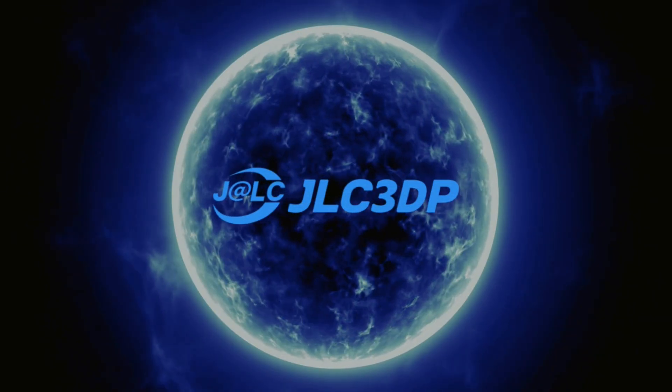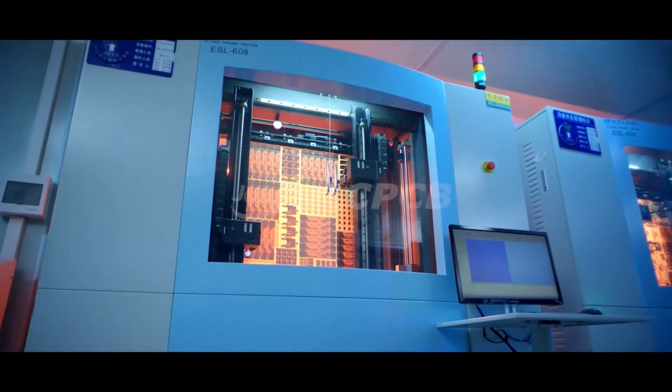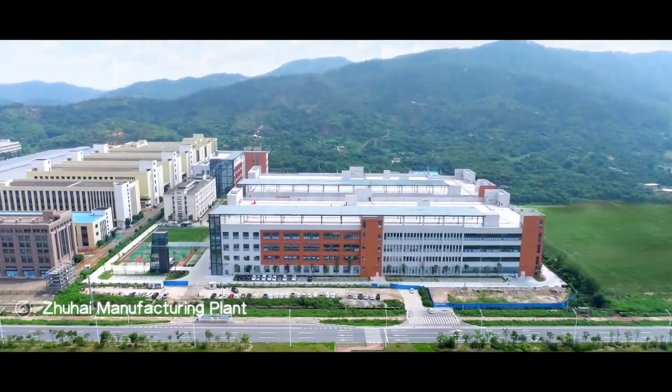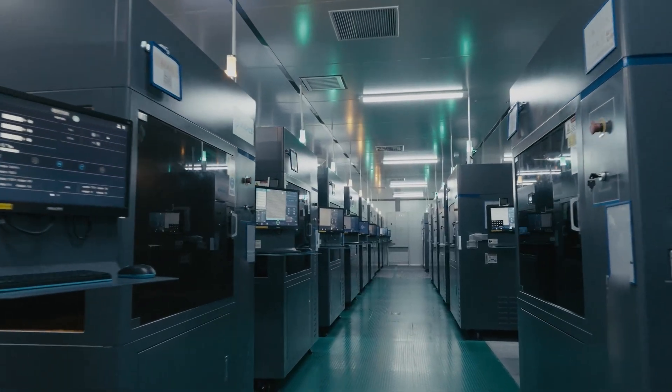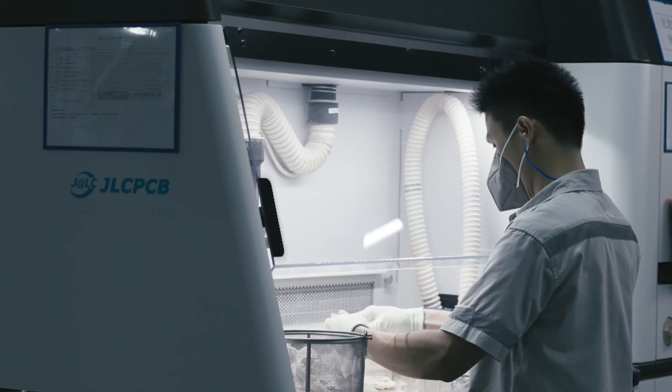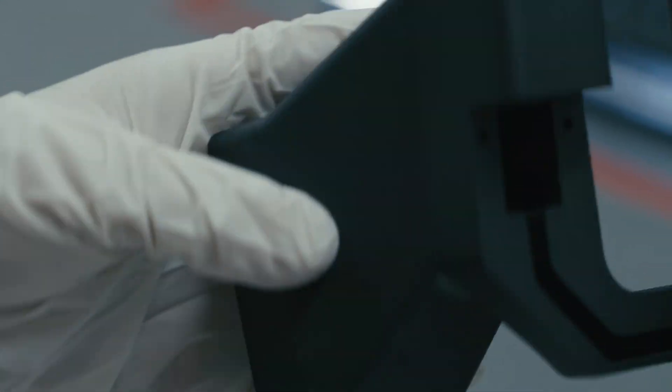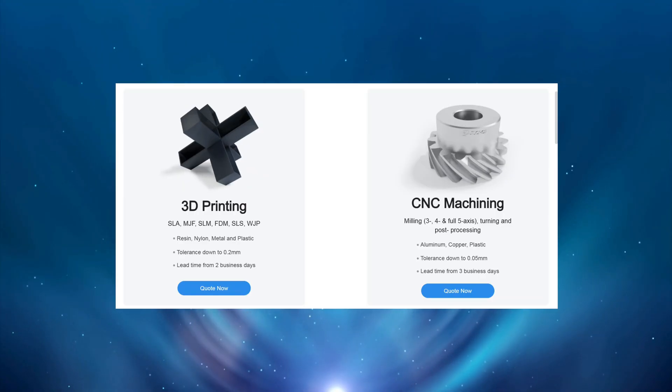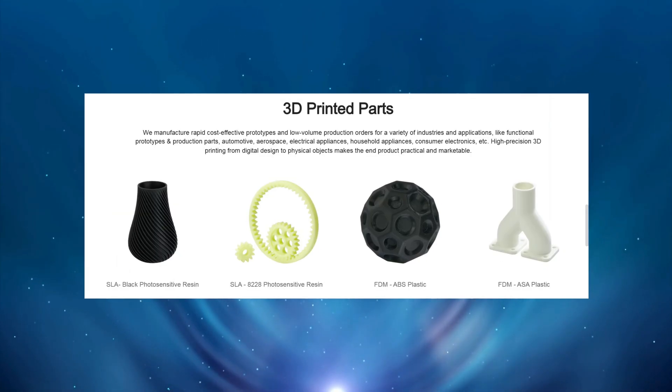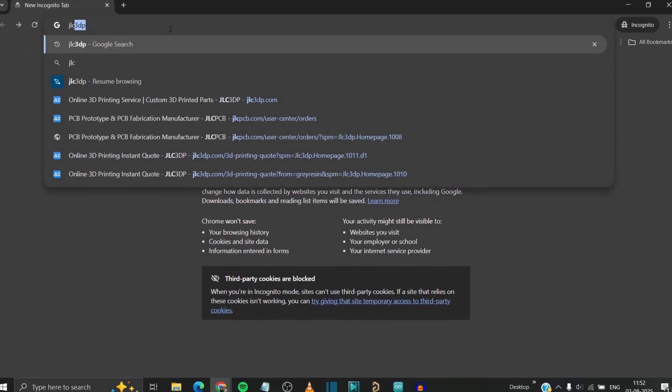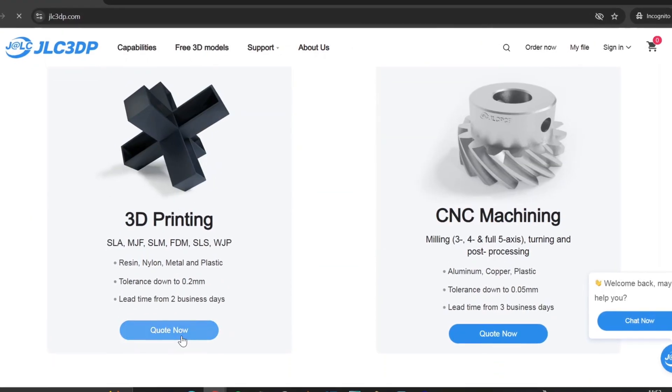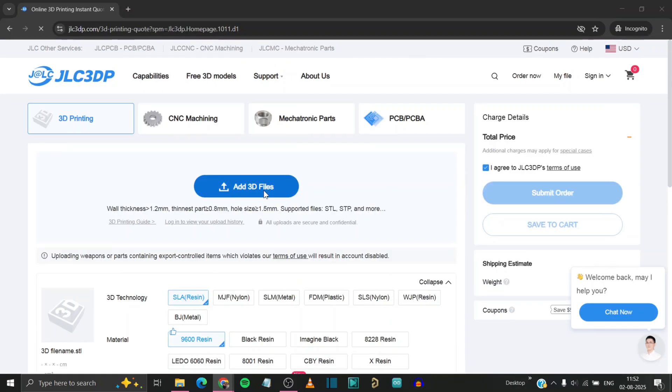JLC 3DP is a well-known manufacturer of 3D printed parts. They have 3000 square meters of factory and over 200 industrial grade 3D printers. They also provide 3D printing services for those who don't own a 3D printer and need to prototype their project at low cost. They offer 3D printing and CNC machining with a variety of technologies and materials.